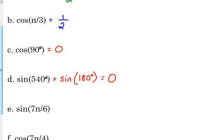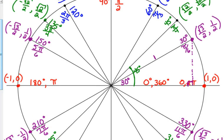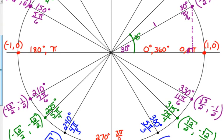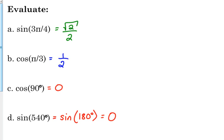The sine of 7π over 6. 7π over 6 is bigger than 1, so I'm in the third quadrant. Sine is the y. So that's negative 1 half.